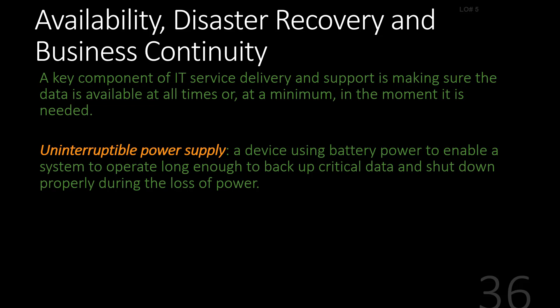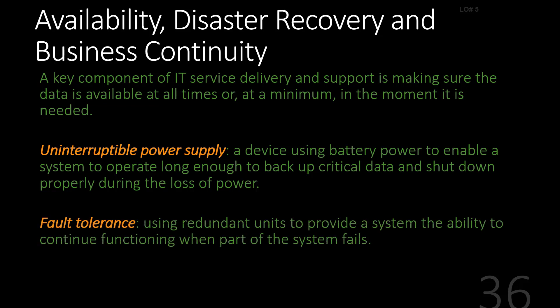An uninterruptible power supply, or UPS, is good for that first level of just losing power. Fault tolerance uses redundant units to allow our system to keep operating if part of the system fails.